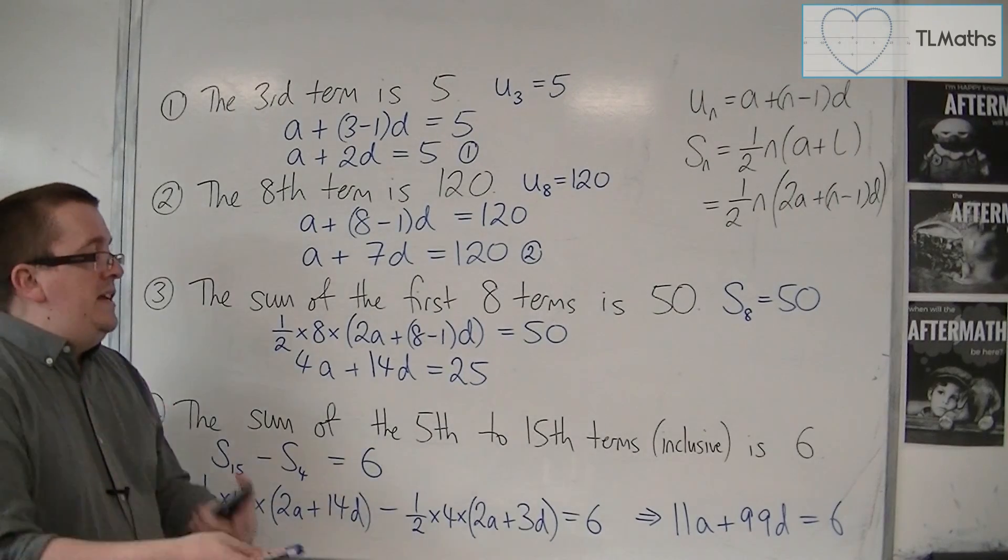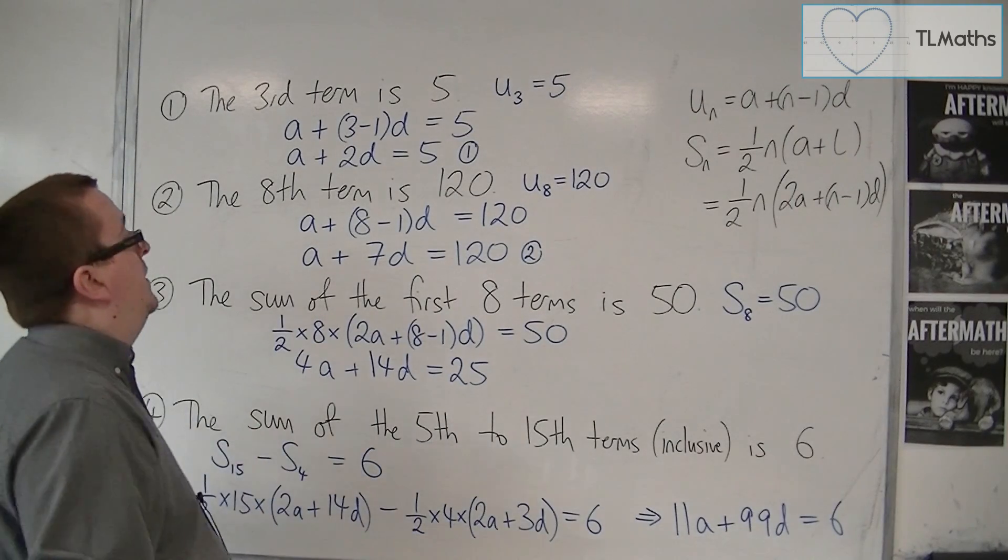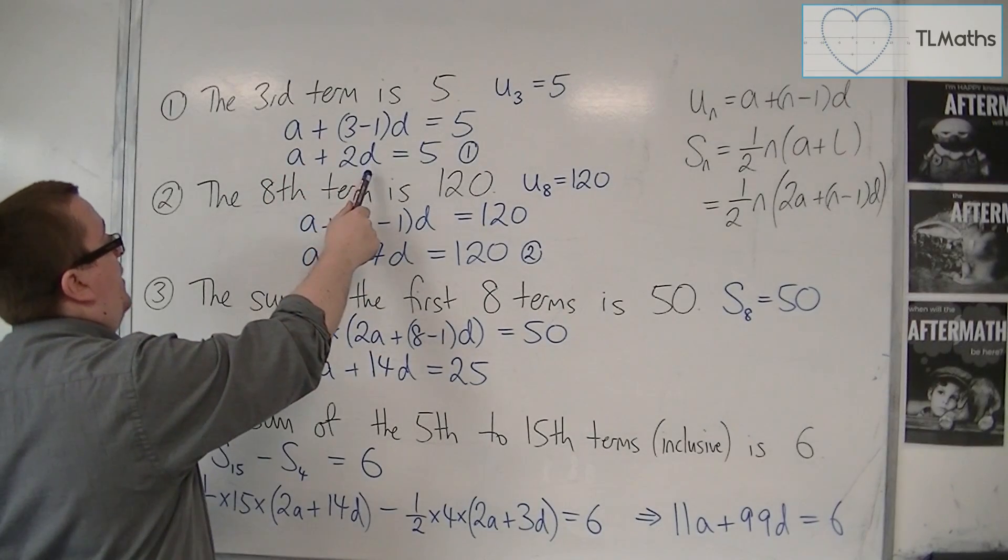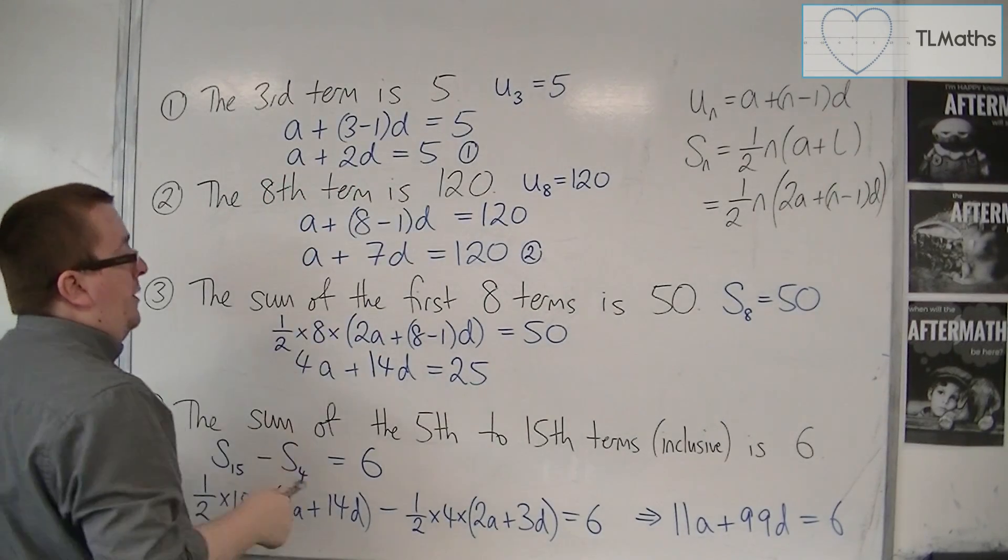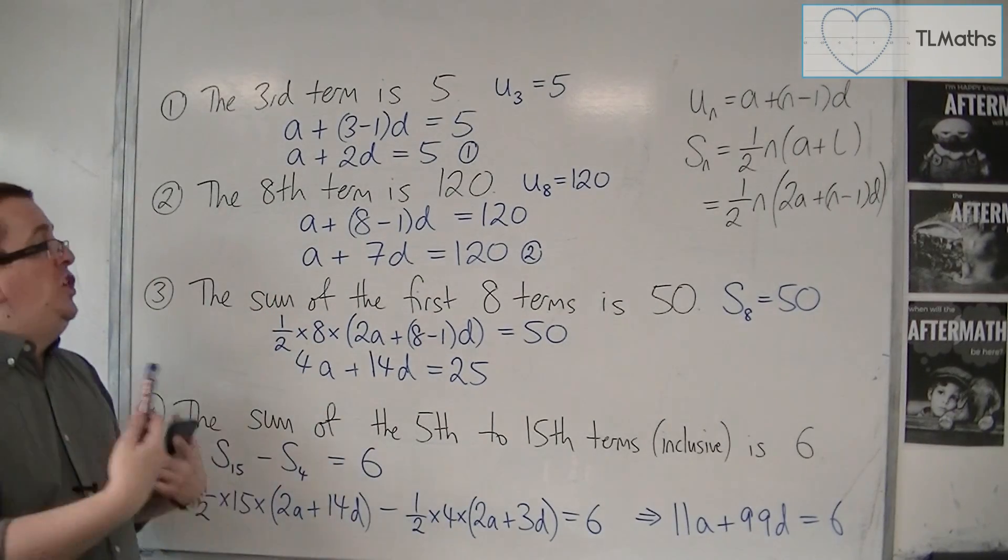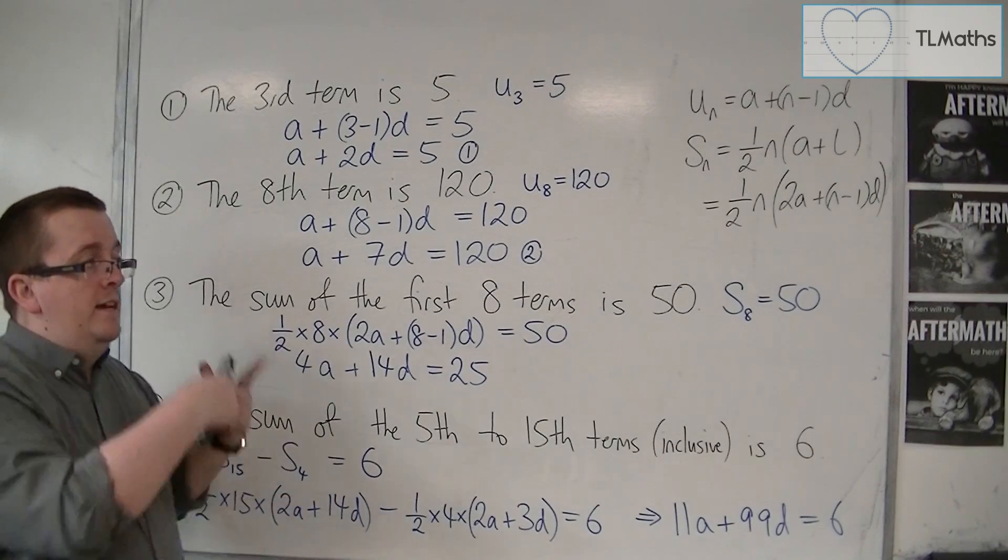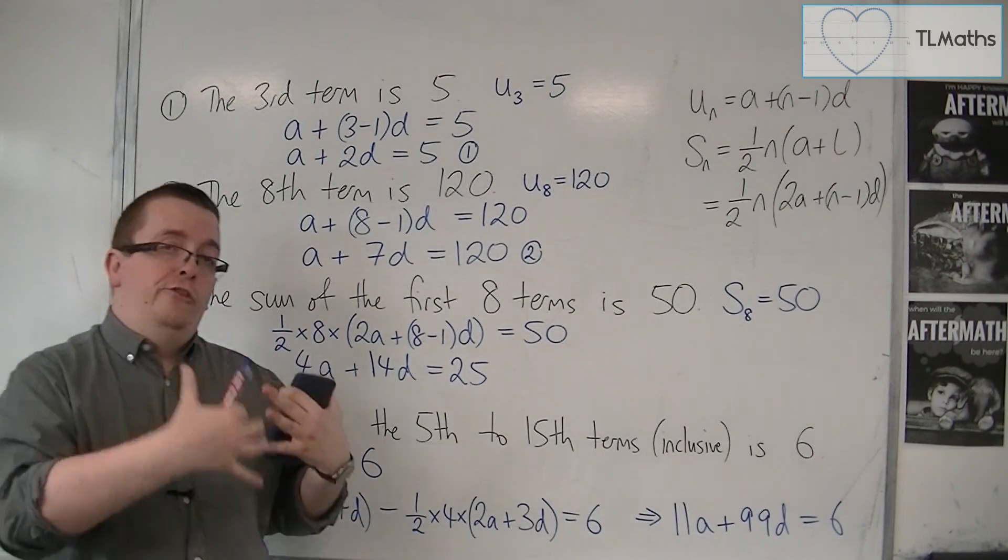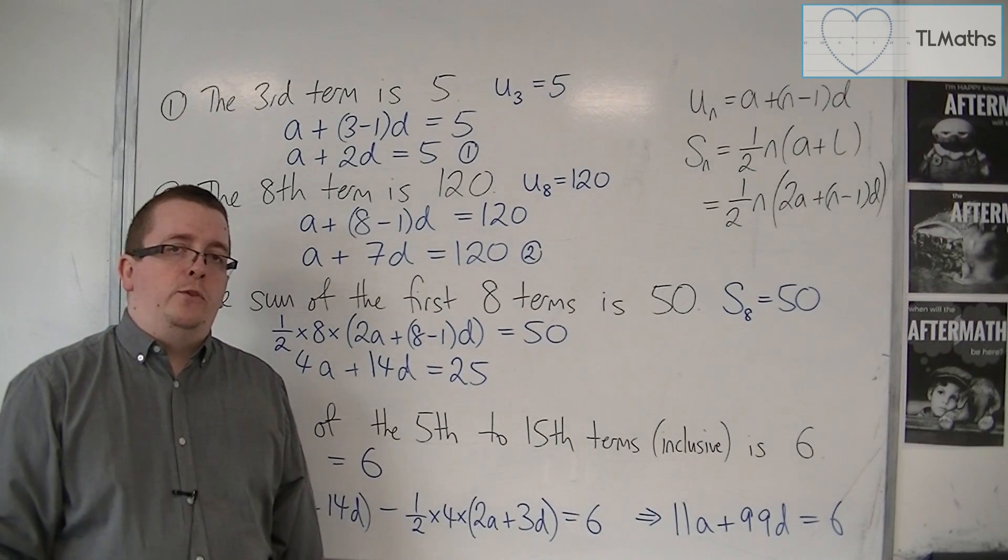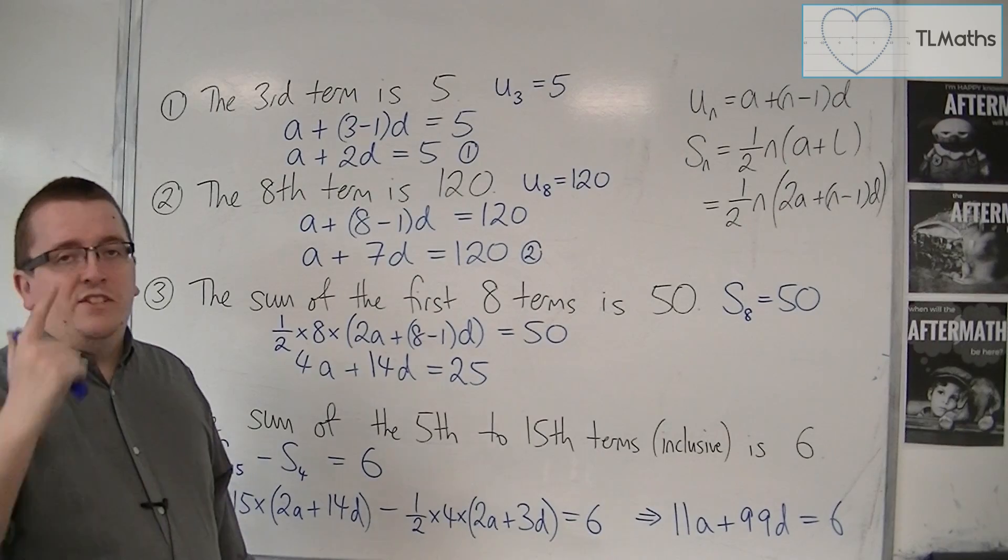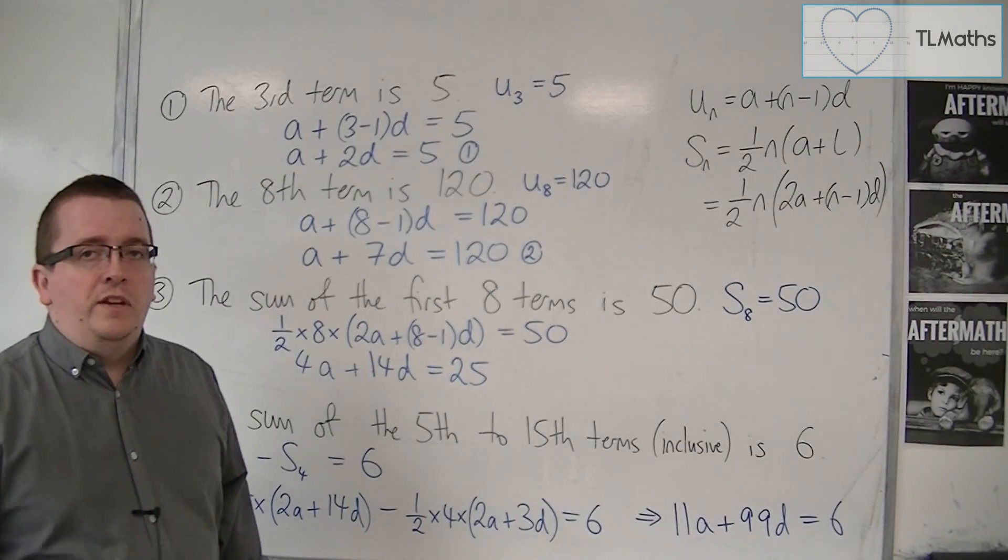So you can see that in each of these cases, we are simplifying the problem down to some number of a plus some number of D is equal to some number. That will then allow me, if I'm given two equations, two sentences, two bits of information, I can get it down to two equations from which I can then use simultaneous equations. We're then going to go into an example of this in the next video.